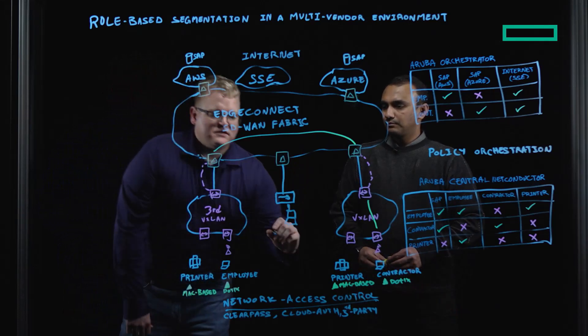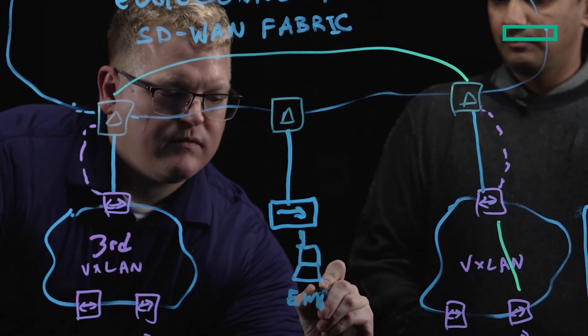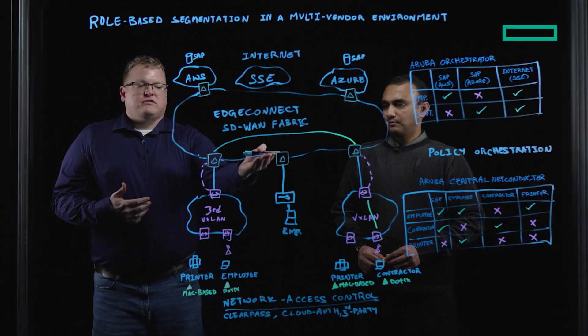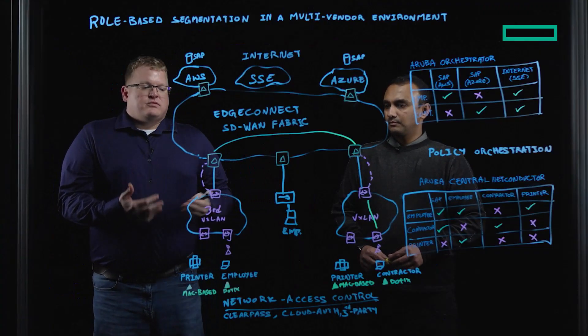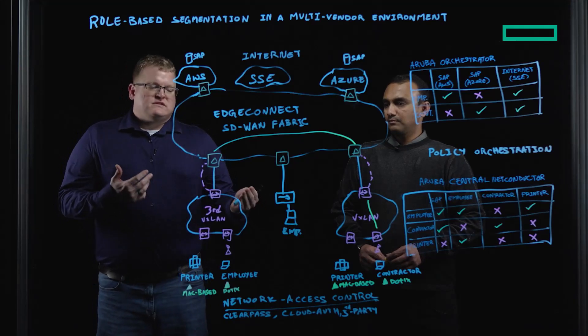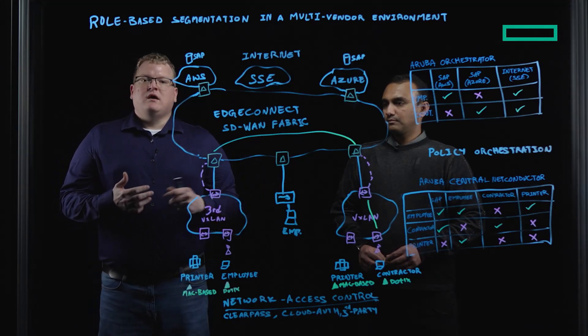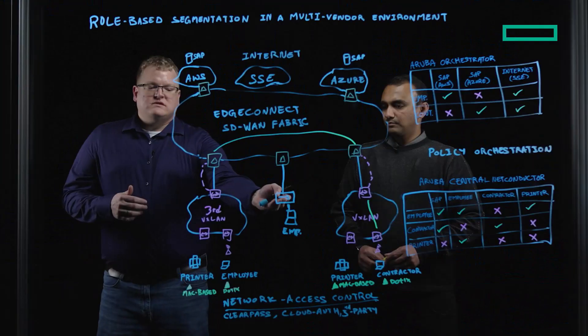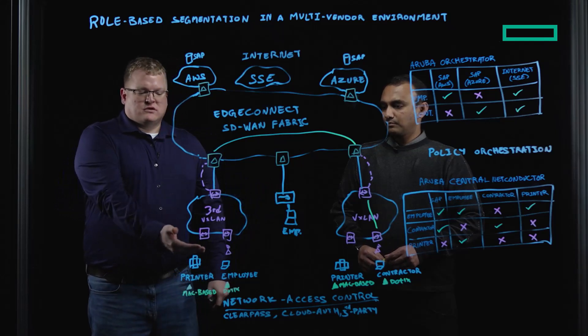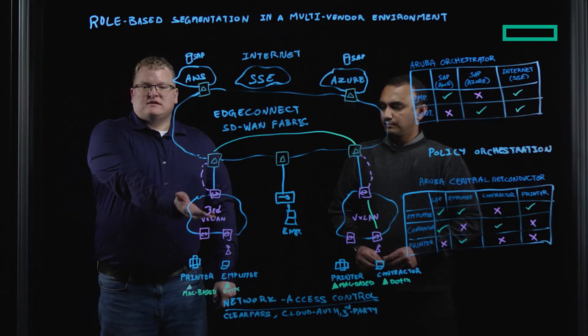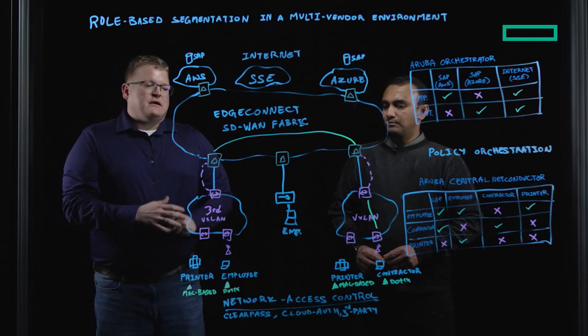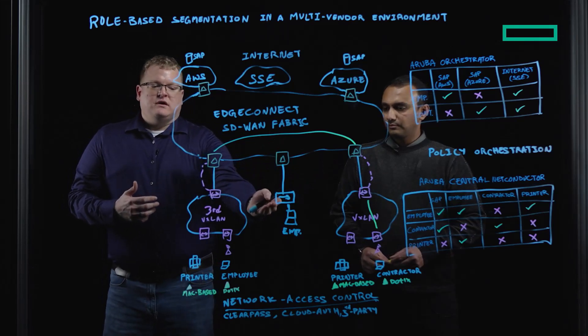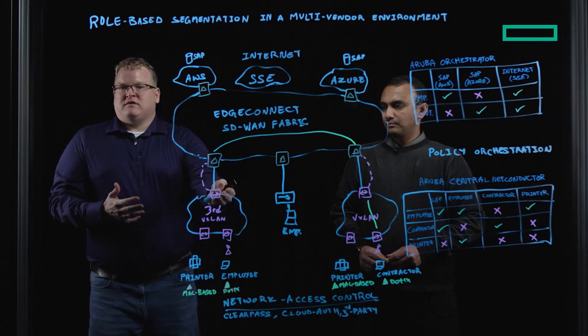So by doing this, the EdgeConnect is able to learn that the role is, in this example, employee learned through RADIUS snooping and then able to implement the same role-to-role segmentation policies across the SD-WAN fabric, whether the user is learned through RADIUS snooping at this site through this vendor switch or the user is learned as an employee at this site through the third-party VXLAN fabric. The same role information is carried across the SD-WAN, whether it's learned via RADIUS snooping or the EVPN and VXLAN.